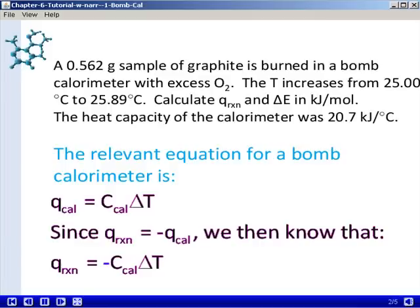The relevant equation that we'll use for bomb calorimeter calculations is that Q for the calorimeter equals C_cal, the heat capacity of the calorimeter, times ΔT, the change in temperature. But since we know that Q for the reaction is equal to negative Q for the calorimeter, that is, the reaction and the calorimeter have the same magnitude of heat exchange but opposite in sign, we then know that Q for the reaction is equal to negative C_cal times the change in temperature.